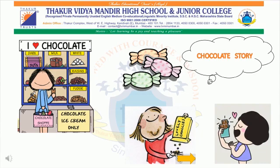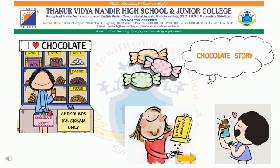Once, Rim's mother went to the market. On her way back home, she bought chocolates for Rim. Mother gave Rim three chocolates. But Rim was not satisfied. She wanted more chocolates.